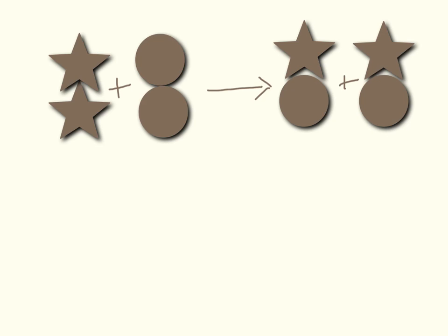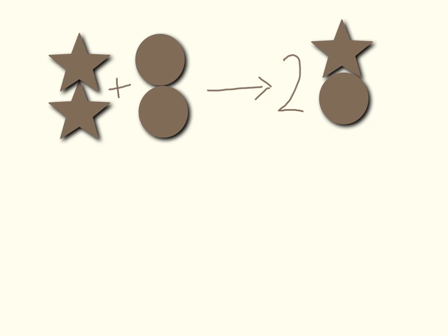Over here I have a compound with two stars in it, and over here I have a compound with two circles in it. After the reaction has happened, I have a compound that is star-circle, star-circle. An easier way for us to write this is two star-circle — instead of just writing star-circle, star-circle, writing two star-circle is much easier.